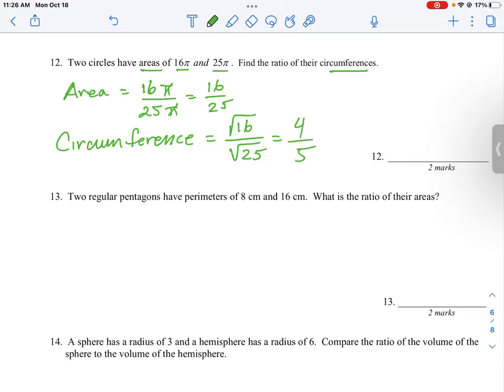So the ratio of the two circles in terms of their circumferences is not going to be 16 by 25. It is going to be the square root of 16 and the square root of 25, which is 4 to 5. That's how you would look at question number 12 where you're going from area down to a linear measurement.